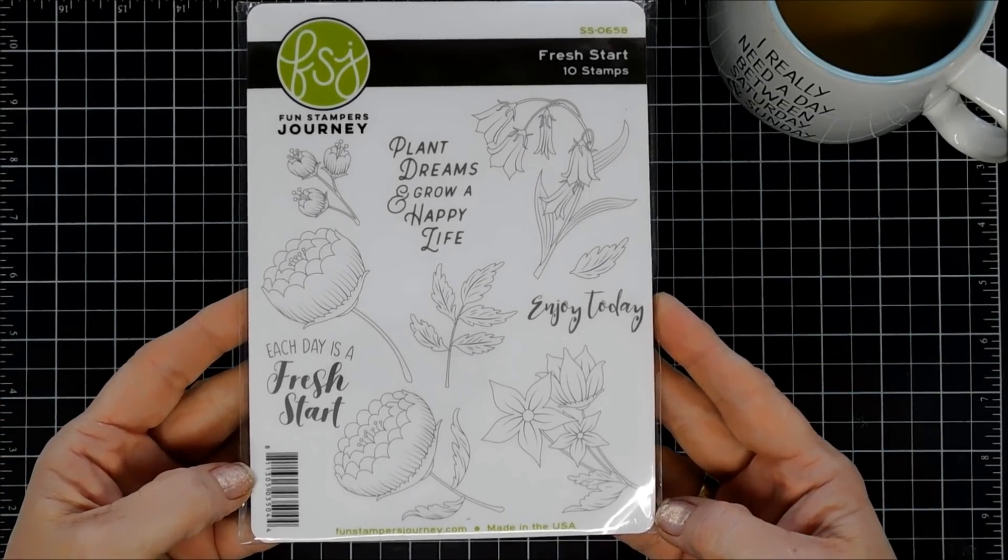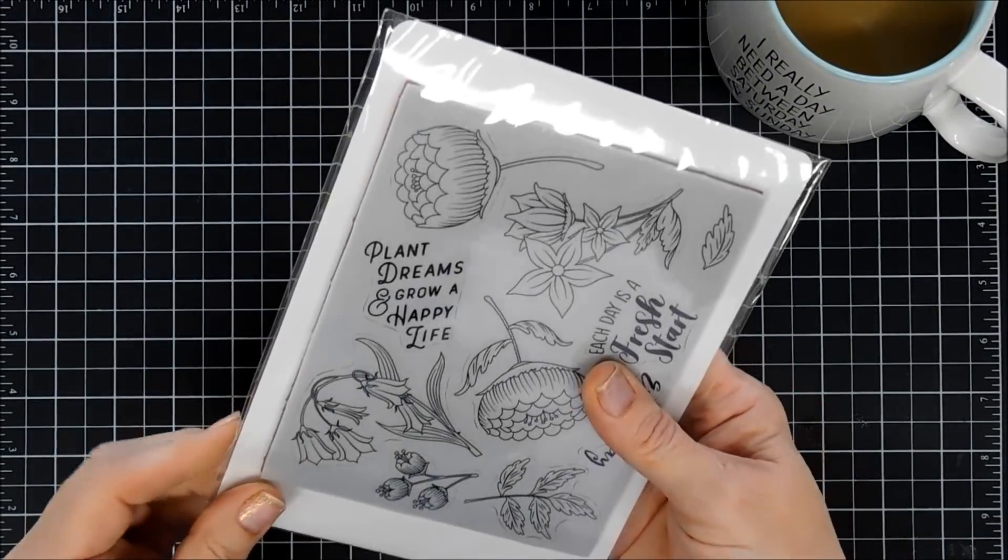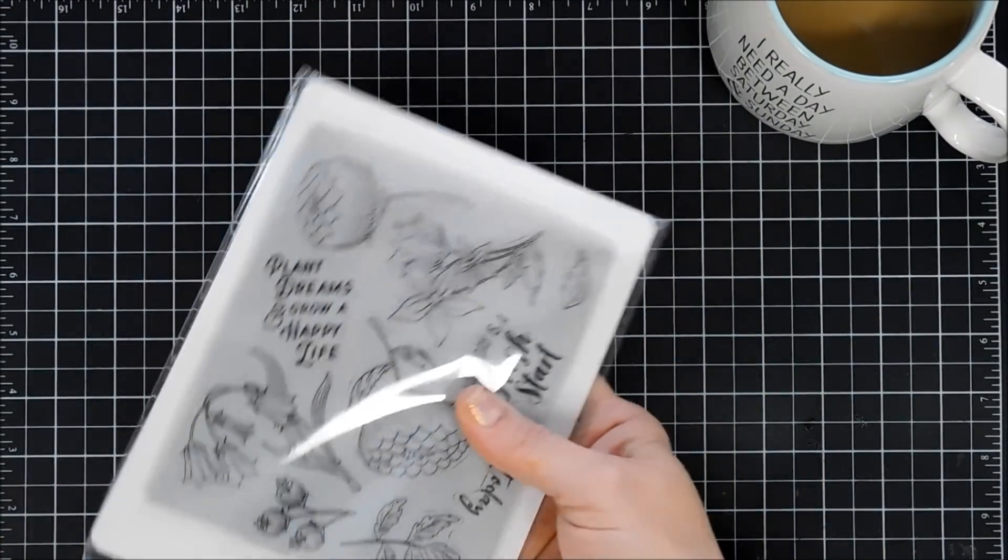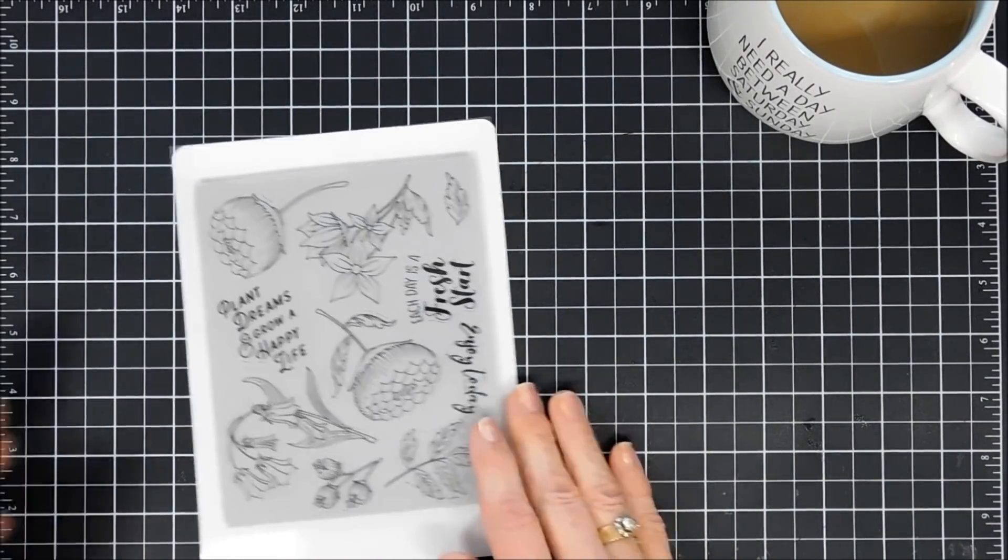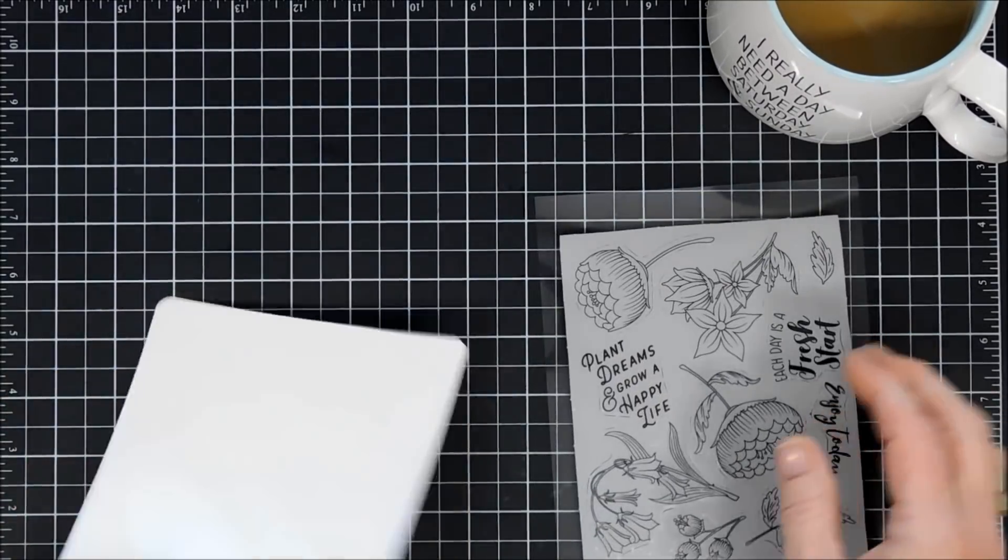It's a 10-piece floral image stamp set and has some beautiful sentiments. You have 'enjoyed today,' 'plant dreams and grow a happy life,' and 'each day is a fresh start.' Super pretty!